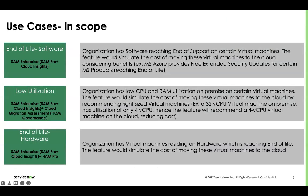The use cases in scope are three. The first is end-of-life software. Organizations have many softwares reaching end-of-life or end-of-support, and this feature would simulate the cost of moving virtual machines having those softwares installed to the cloud, taking into consideration the benefits provided by different cloud providers. For example, MS Azure provides free extended security updates for certain Microsoft products like SQL Server 2008 while it's reaching end-of-life. However, AWS does not provide that benefit. This feature would showcase the cost on AWS versus Azure so that SAM managers can take the most effective decision.